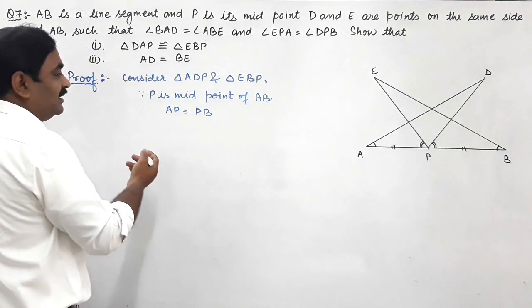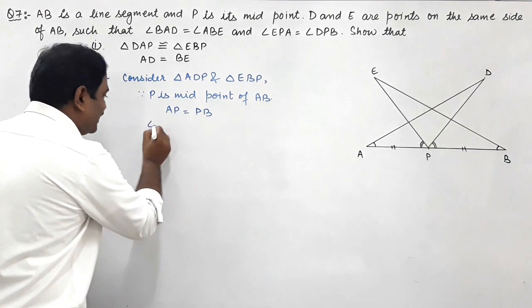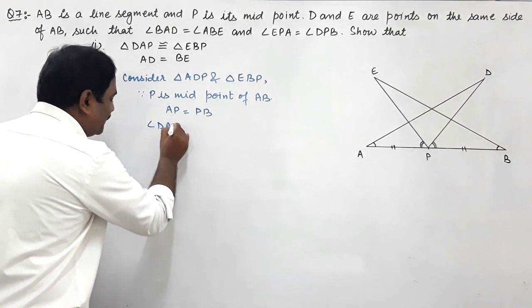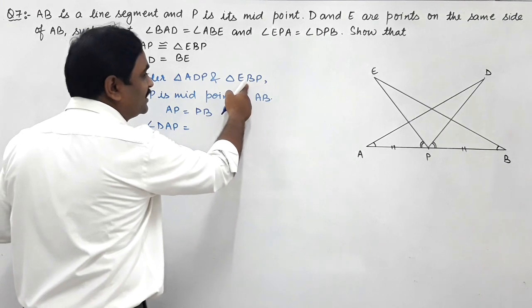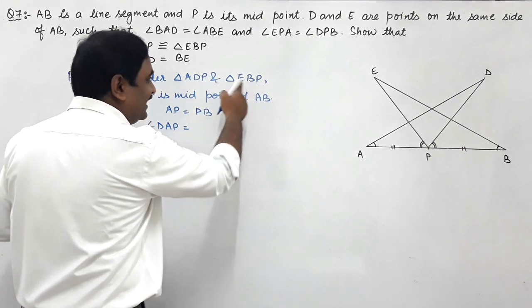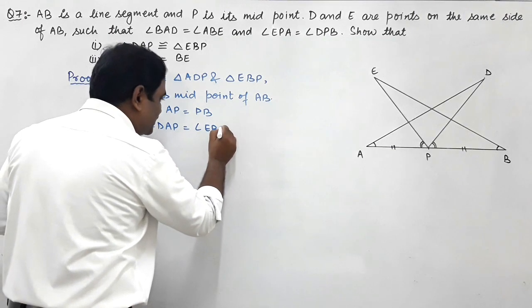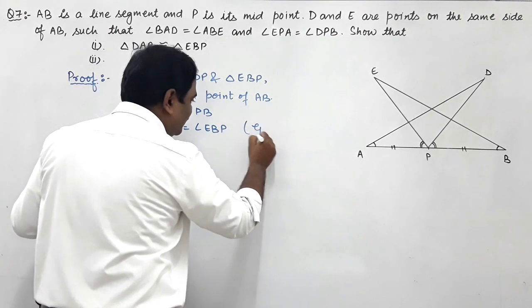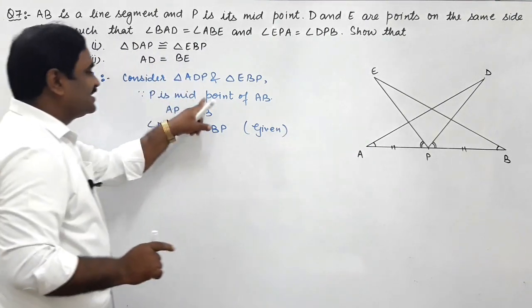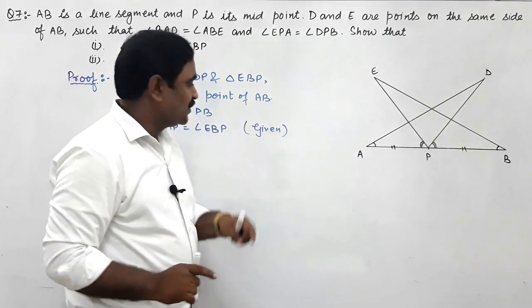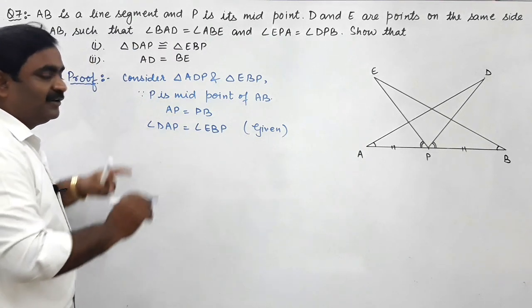In triangle ADP, angle DAP is equal to angle EBP in triangle EBP, which is given. So one side and one angle of both triangles are equal.